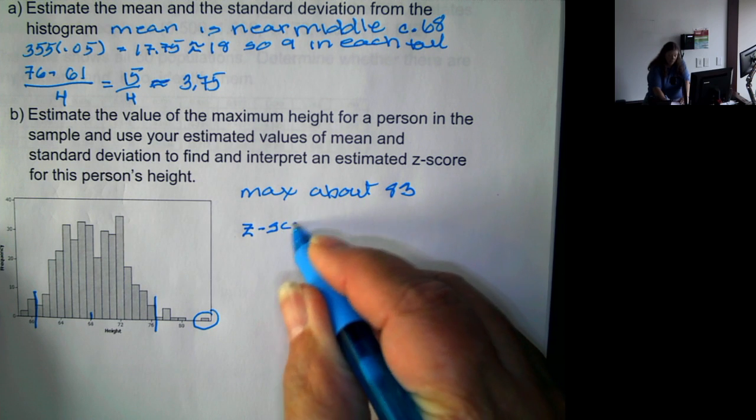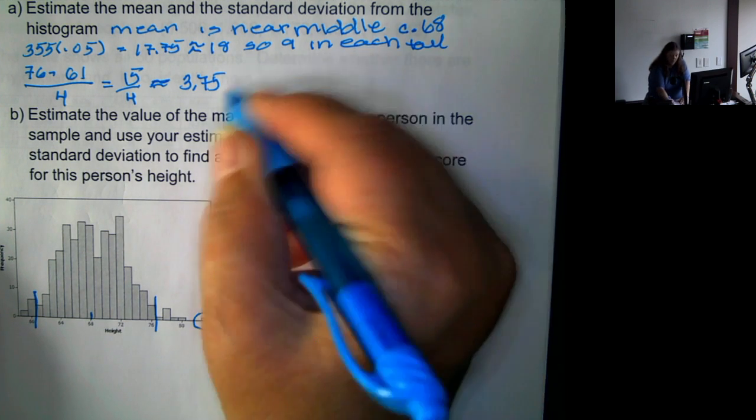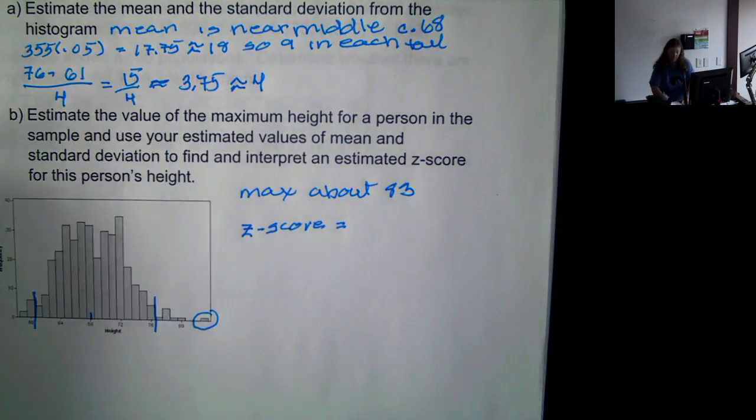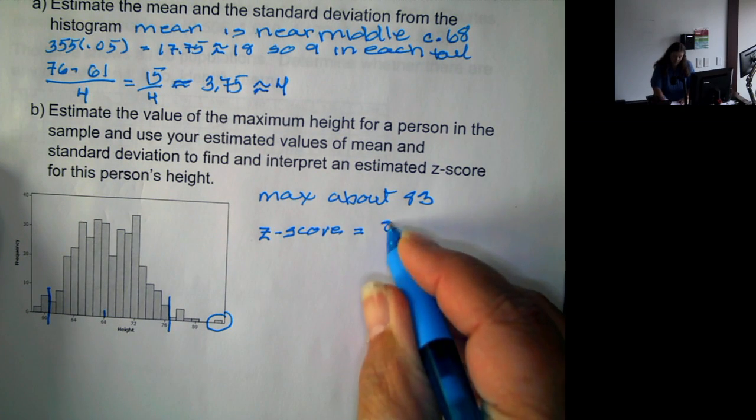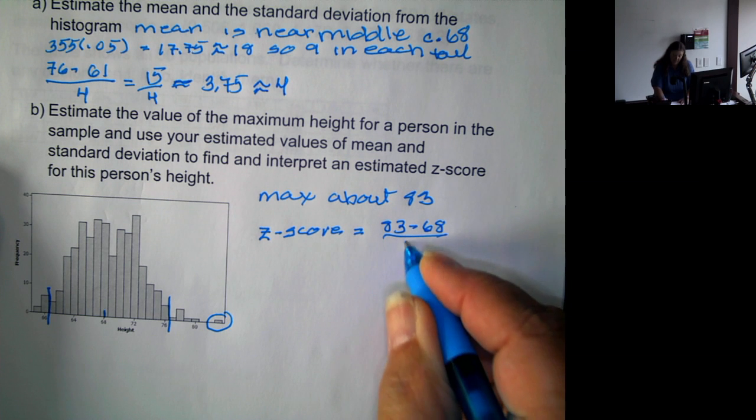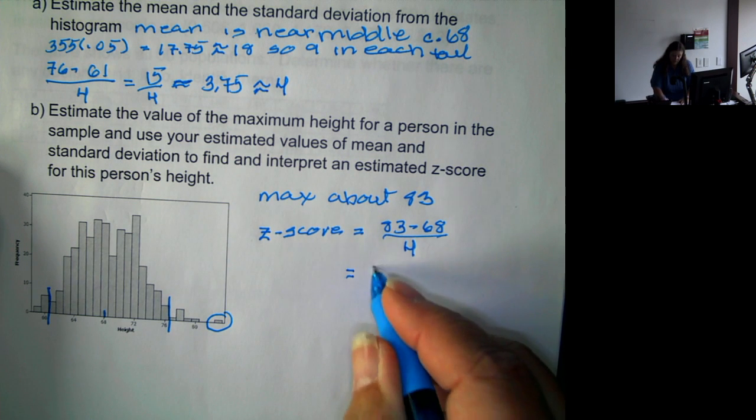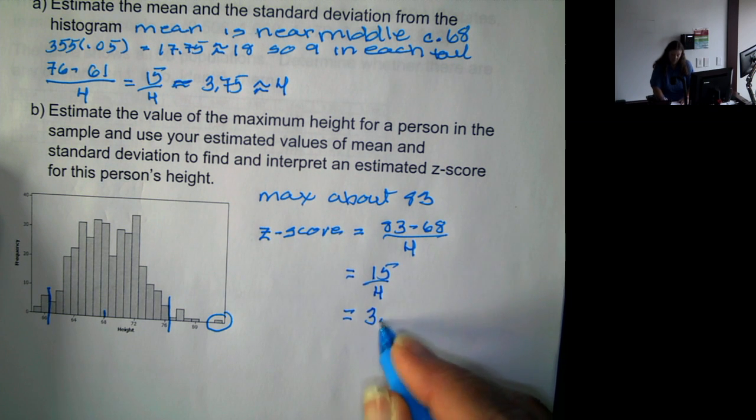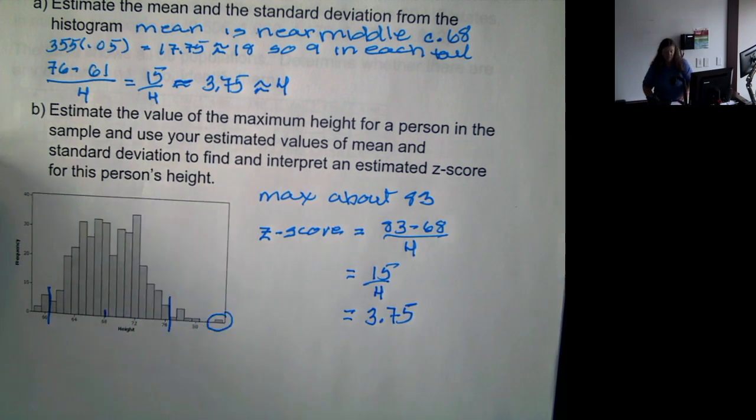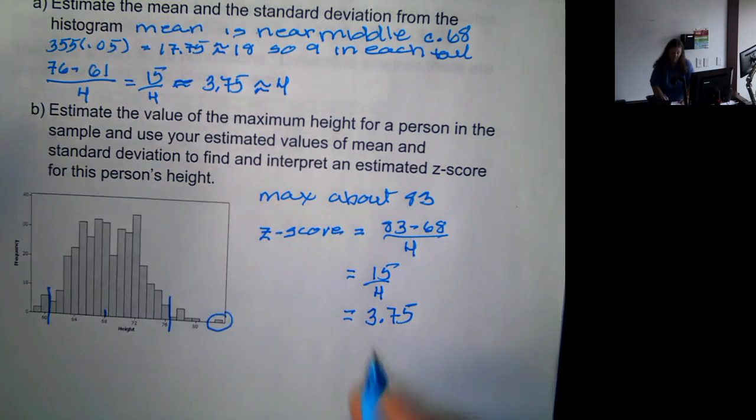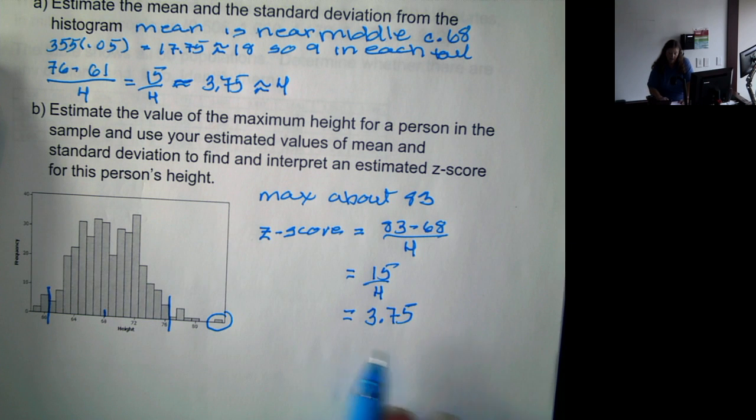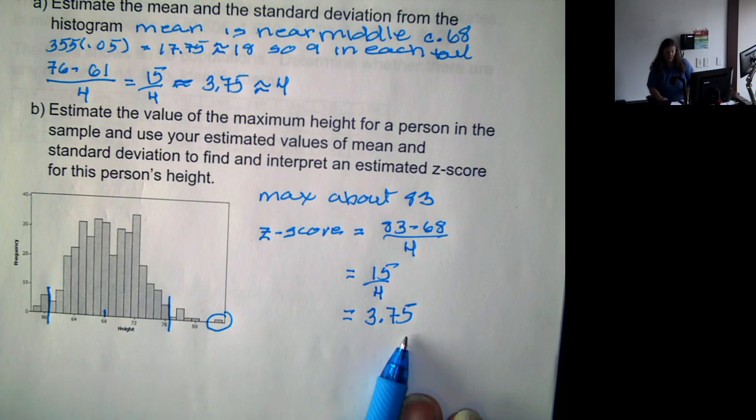So the z-score, we'll round this up to 4. We usually don't, but because it's an approximation, we can round it. So the z-score would be 83 minus 68 divided by 4, which is 15 over 4, which is 3.75. And interpreting this, it would be that the student of maximum height is about 3.75 standard deviations above the mean.